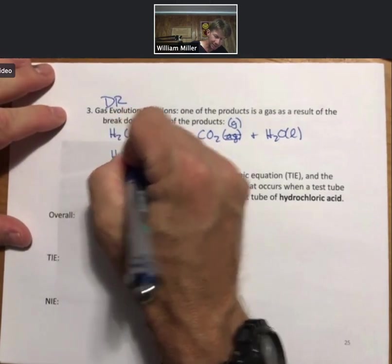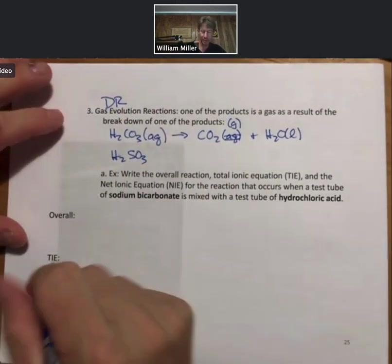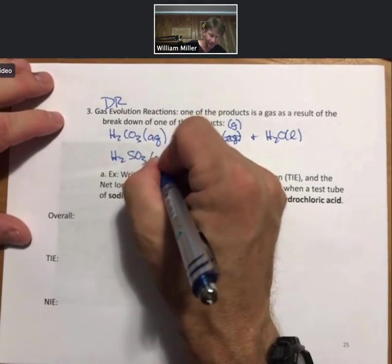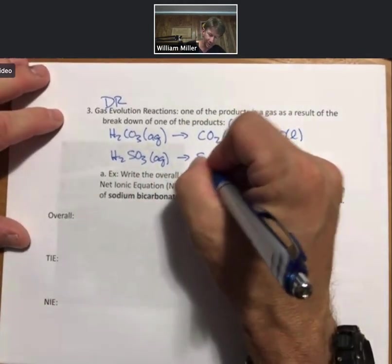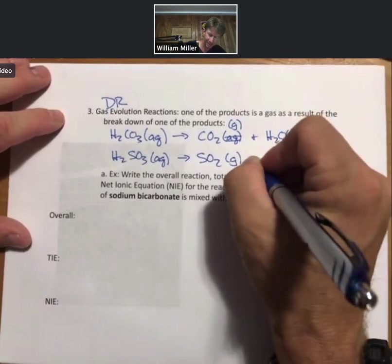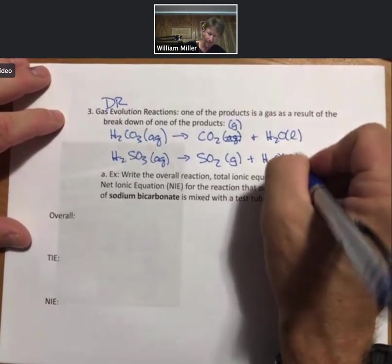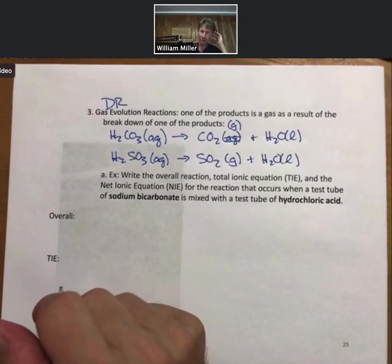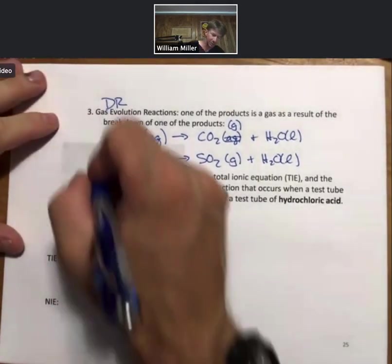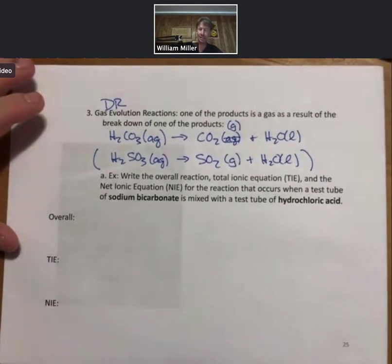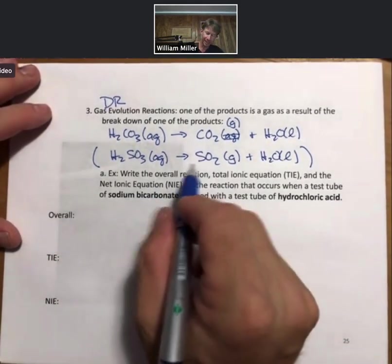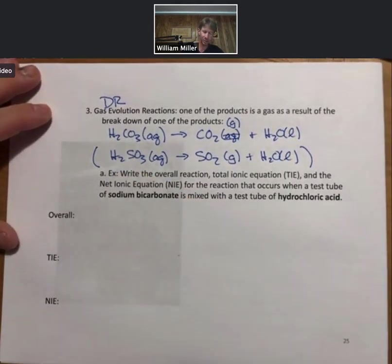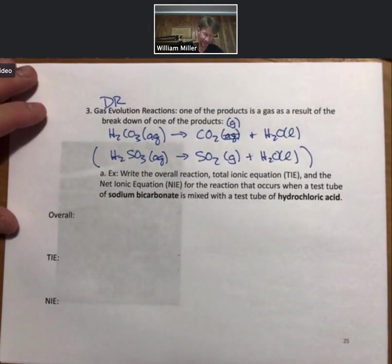There's another one, you don't see this as much, if you take sulfurous acid, H2SO3, as a product of a reaction, it will make sulfur dioxide gas plus H2O. This one, you again, won't see as often, probably not going to see it on quizzes or exams, so I'm going to put parentheses around it. You are much more likely to see it on the homework, but we'll concentrate on the carbonic acid example.